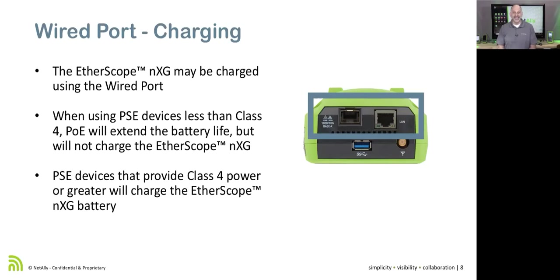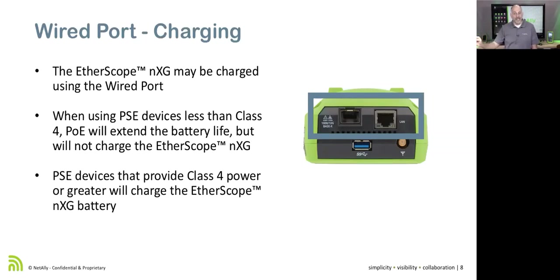Because you can remote into it, you can plug this in and leave it plugged in. The worst place you can put it is in your desk drawer. With the discovery capabilities of the Etherscope NXG, the best approach is to plug the network port into a VLAN trunk, plug the management port into a switch, and then VNC in anytime to see what's going on. If plugged into a Class 4 or better PoE connection, it will charge while plugged in — no USB-C charger needed.